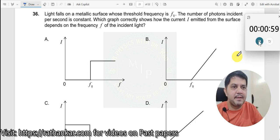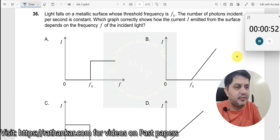Question number 36. Light falls on a metallic surface whose threshold frequency is F0. This is a question on photoelectric effect.